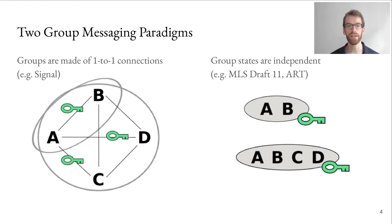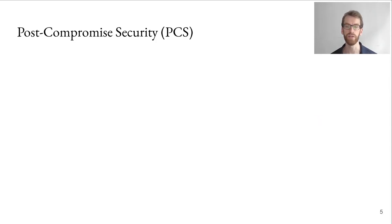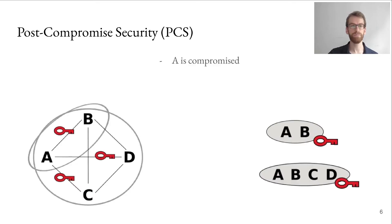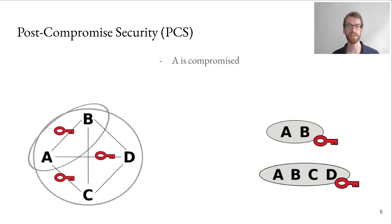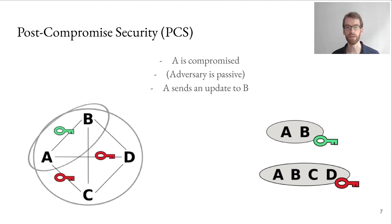In our work, we analyze the security of these two group messaging paradigms with regard to post-compromised security. Post-compromised security is the property of a protocol that allows a compromised party to heal. Let's look at an example. Say A is compromised — we use the red keys to indicate this. Now A can send an update to heal a connection. So let's say A sends an update to B.